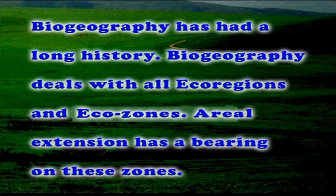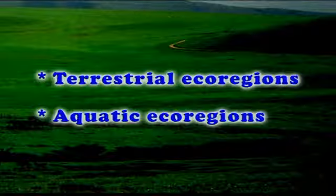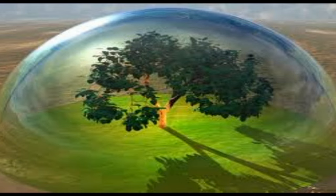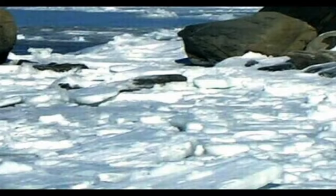Let us see the fourth important aspect: the biogeographic realms of the world. Biogeography has had a long history and deals with all eco-regions and eco-zones. Aerial extension has a bearing on these eco-zones. Local sites may be within a few hectares of land; a landscape mosaic may occupy ten to thousands of square kilometers; an eco-region may occupy several thousand square kilometers. There are two general types of eco-regions: terrestrial and aquatic eco-regions. Biogeography attempts to evaluate the eco-regions of both terrestrial and aquatic realms. Eco-regions of the oceans and islands are very important aspects included in biogeographic studies.